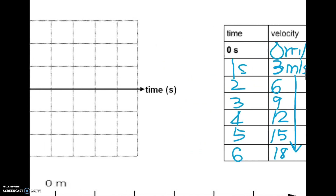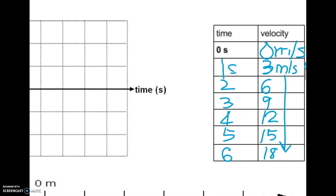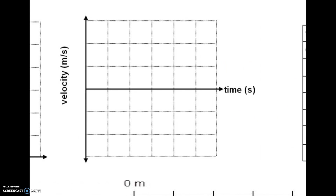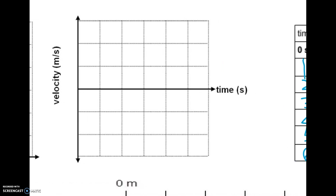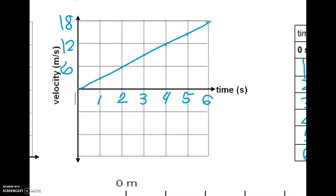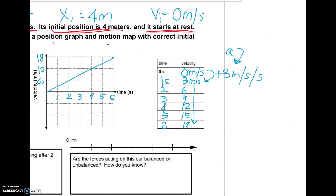Coming over to the graph, we know it's going to go up by threes. So we'll label six, twelve, eighteen on the velocity axis. At one second it's at three, two seconds it's at six, three seconds at nine, four at twelve, five at fifteen, and six at eighteen. This makes a straight line, and our velocity-time graph and table are done.